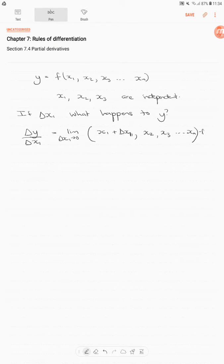but x2, x3 up to xn remains the same. That is our new point, minus f(x1, x2 up to xn), all over the change in x1.